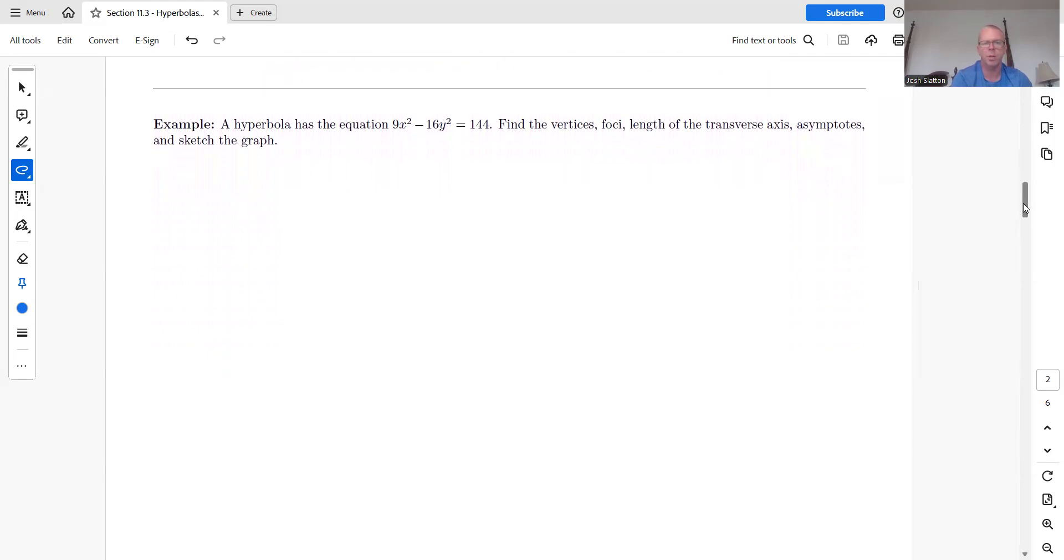But we'll talk about how to graph these. And this is kind of the steps to do that if you wanted to graph these by hand. So we have the equation, 9x squared minus 16y squared equals 144. We're going to find the vertices, foci, length of the transverse axis, asymptotes, and then we're going to sketch the graph. So the first thing we need to do, we obviously want this to be equal to 1. So we're going to divide both sides by 144. And so that gives us x squared over 16 minus y squared over 9 equals 1. So this is going to be a horizontal one, since the x squared is the first term.